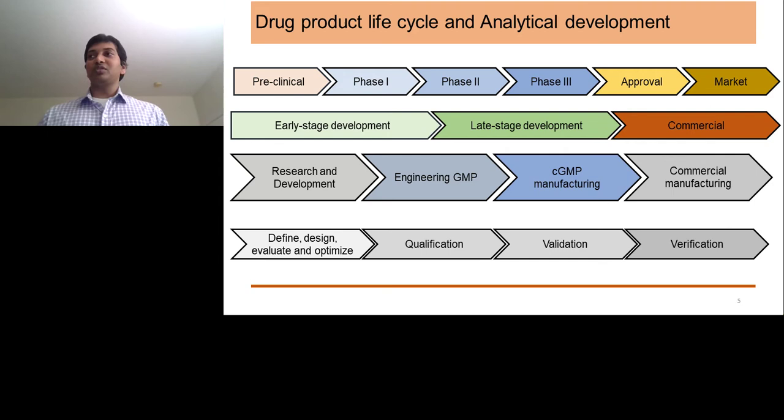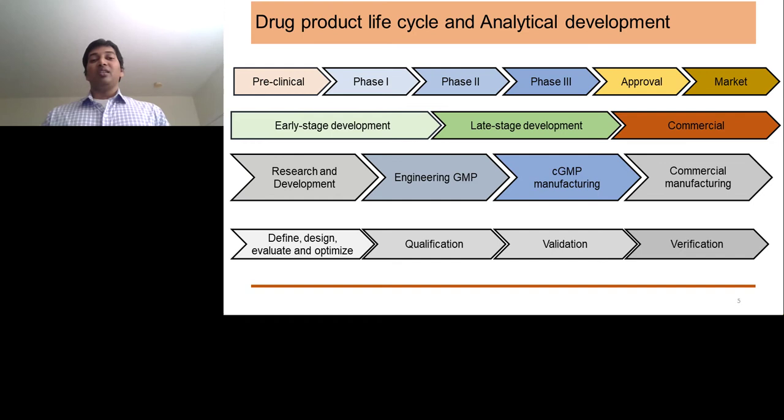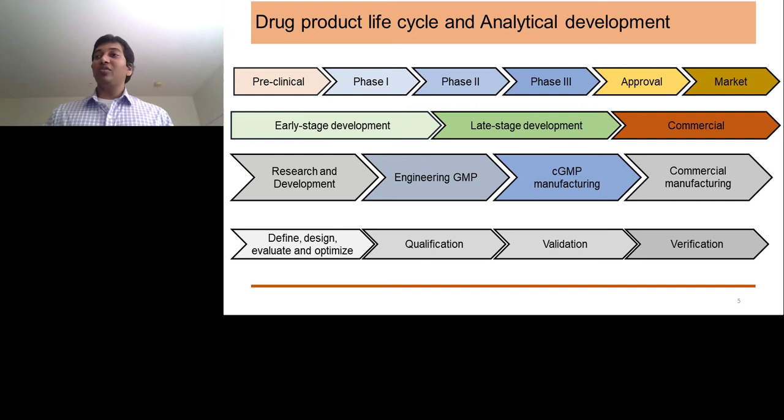Qualification is a process where you take the whole assay from the research stage and look at more critical parameters like specificity, linearity, precision, and the range of quantification. This helps with your phase one and phase two products — most assays used for those phases have been qualified. But as you move on to phase three and the approval process, you have to have the assay validated.